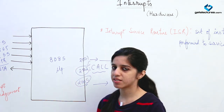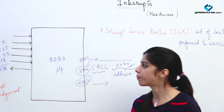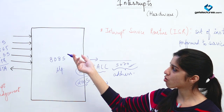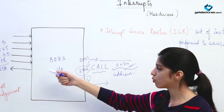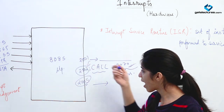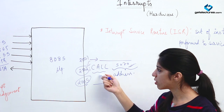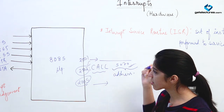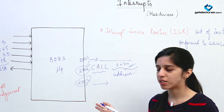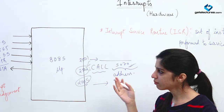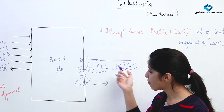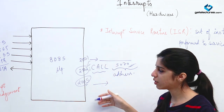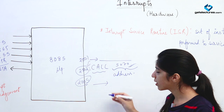When you raise an interrupt, internally a CALL operation is performed. Whatever is the address of the ISR — that is already known — that address is called using this CALL instruction. After the ISR is completed, whatever commands were written are completed, and we come back to our previous program — whatever program was being executed will resume.